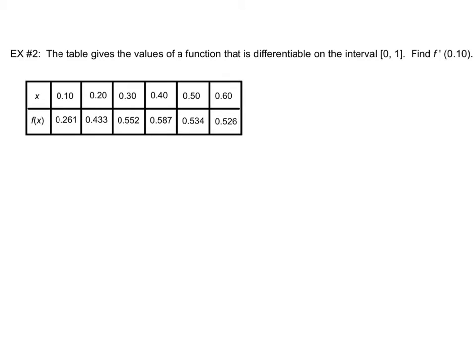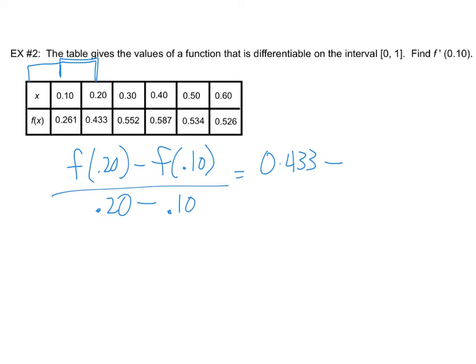So here's another example. The table gives the values of a differential function from 0 to 1. Find the derivative at 0.1. Alright, so 0.1 is over here at this left side. And so once again, the original was to go to the right, go to the left and average. But they have not given us all that data. So what we really want to do on this one is we're just going to be able to go to the right. So another way to write this would say f of 0.20 minus f of 0.10 over 0.20 minus 0.10. And so this would be 0.433 minus 0.261 over 0.1 and throw that in your calculator and you will get 1.72. It's not too bad once you've done a couple of examples.